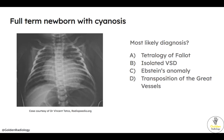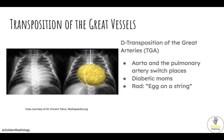Next question: full-term newborn with cyanosis — most likely diagnosis? Tetralogy of Fallot, isolated VSD, Ebstein's anomaly, or transposition of the great vessels? The answer is transposition of the great vessels. As mentioned, this is when the aorta and pulmonary artery switch places, so the aorta comes off the right ventricle and the pulmonary artery comes off the left ventricle. There is a high association of TGA with diabetic mothers, and the buzzword radiologic finding is an egg on a string.